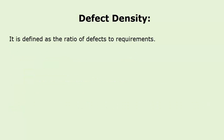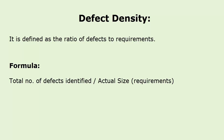Defect density: it is defined as the ratio of defects to requirements. Defect density determines the stability of the application. The formula for defect density metric is: total number of defects identified divided by actual size of requirements. Here goes an example on defect density matrix.